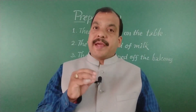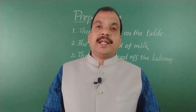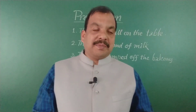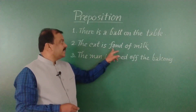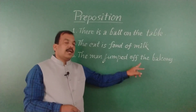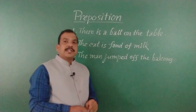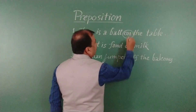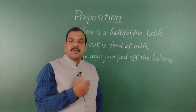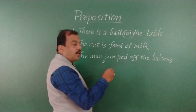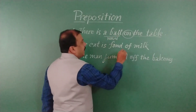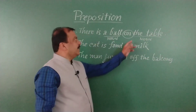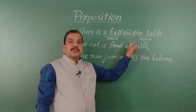Friends, in our class today we shall discuss: first, the definition of preposition; second, the position of preposition; third, the main functions of preposition; and finally, the types of preposition. Before we go to the definition, let's study these examples. In example number one: 'There is a ball on the table.' The preposition used here is 'on,' and it builds a relationship between two nouns — 'ball' and 'table.'